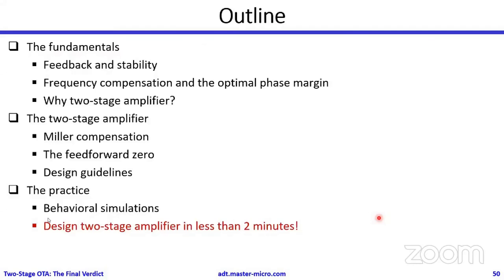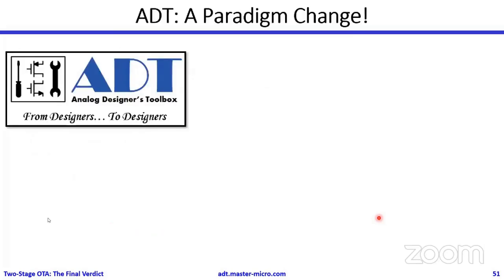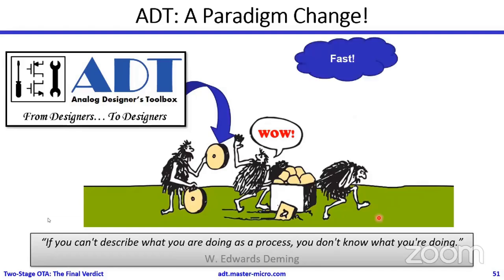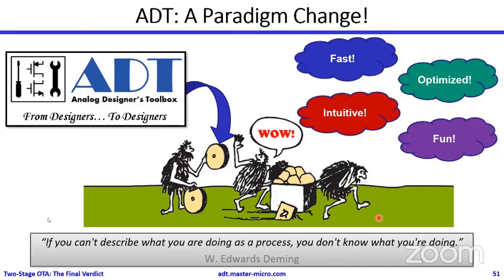These behavioral simulations are very helpful, but with real transistor models you face a completely different scenario with many effects not captured in the approximate analysis. The approximate analysis is essential for understanding relations and tradeoffs, but finding the exact transistor sizing, the right compensation capacitor, the optimal current split, and bias currents for each stage is not straightforward. There are many design strategies, and we will show how to accomplish this using ADT in less than two minutes.